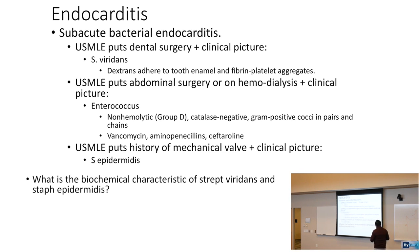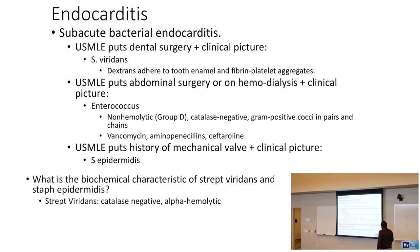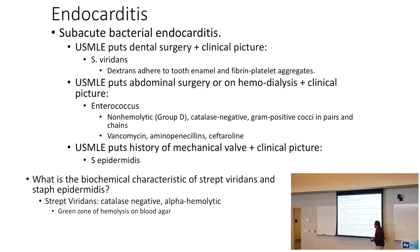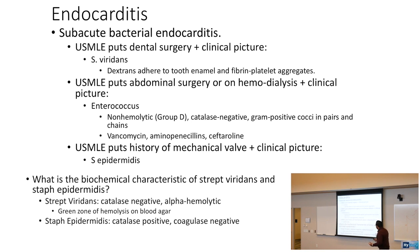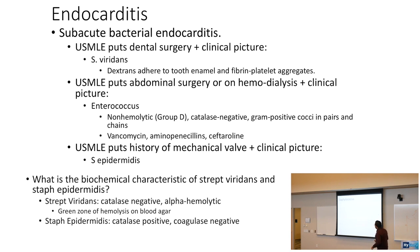Strep viridans is catalase negative and alpha-hemolytic, producing a green zone of hemolysis on blood agar. Staph epidermidis, on the other hand, is catalase positive and coagulase negative. That's how you tease both apart on your USMLE.